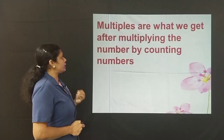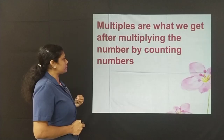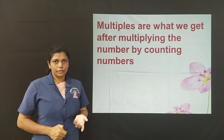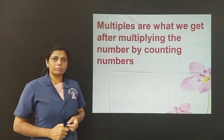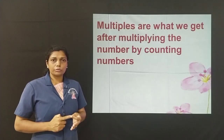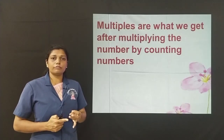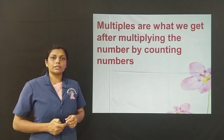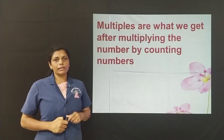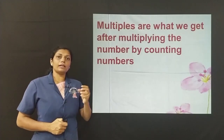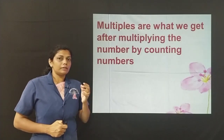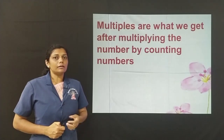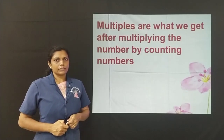Multiples are what we get after multiplying the number by counting numbers. What are counting numbers? 1, 2, 3, 4, 5 and so on. These numbers are called counting numbers. So, when you multiply a number by these counting numbers, we get the multiples. Easy.